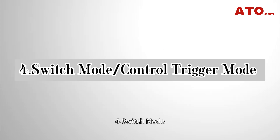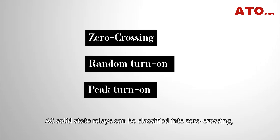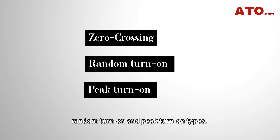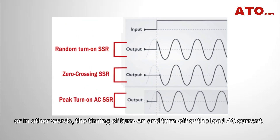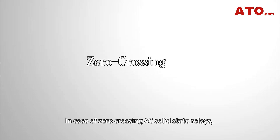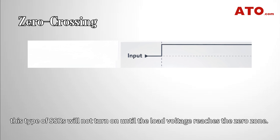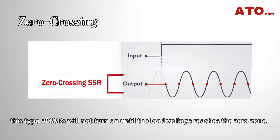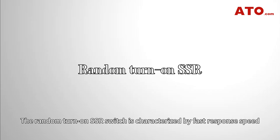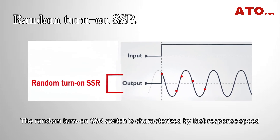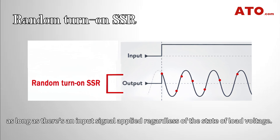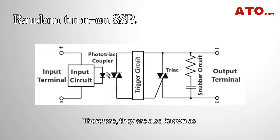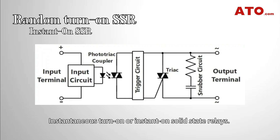4. Switch Mode. Based on switch mode, AC solid-state relays can be classified into zero-crossing, random turn-on, and peak turn-on types. The difference between them lies in the conduction condition — the timing of turn-on and turn-off of the load AC current. In zero-crossing AC solid-state relays, when the input signal is applied, the SSR will not turn on until the load voltage reaches the zero zone. The random turn-on SSR is characterized by fast response speed, as it will immediately conduct the load as long as there is an input signal applied regardless of the state of load voltage, and is also known as instantaneous turn-on or instant-on solid-state relays.